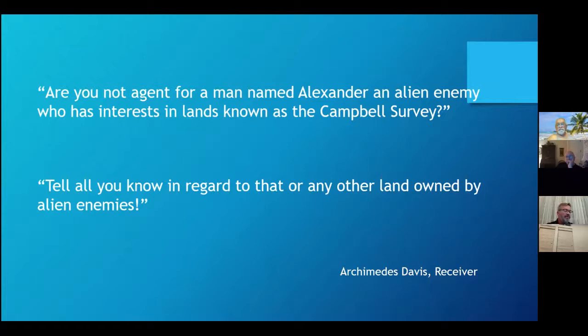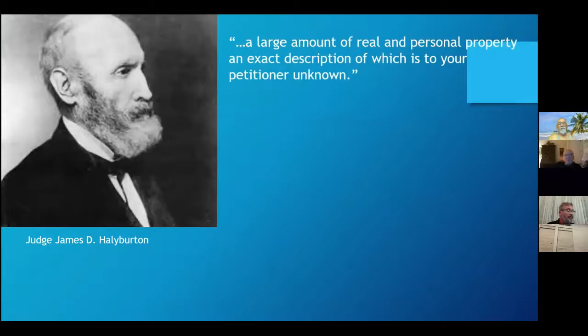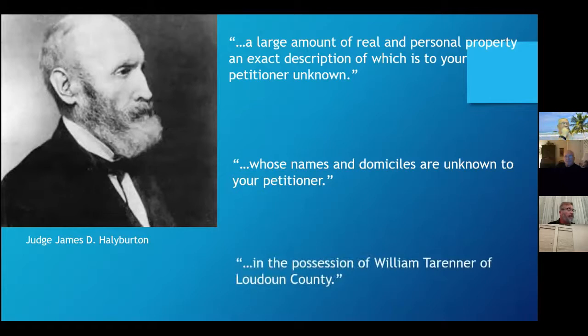For example, in October 1862, Virginia receiver Francis L. Smith petitioned Judge James Halliburton of the District Court for the Eastern District of Virginia for a writ to sequester a large amount of real and personal property, an exact description of which is to your petitioner unknown. Smith claimed that the undescribed property belonged to alien enemies whose names and domiciles are unknown to your petitioner. Nevertheless, Smith was certain that the undescribed property belonging to unknown alien enemies was in the possession of William Tarriner of Loudoun County.